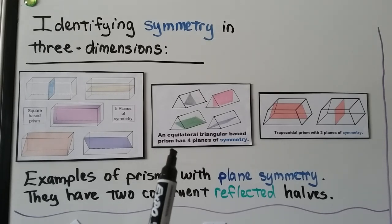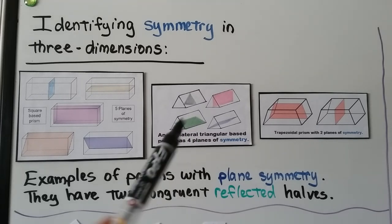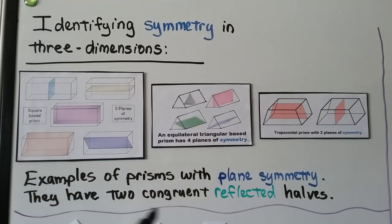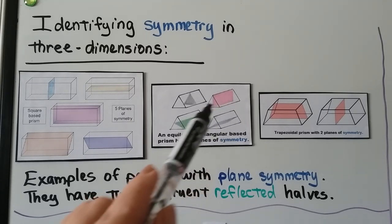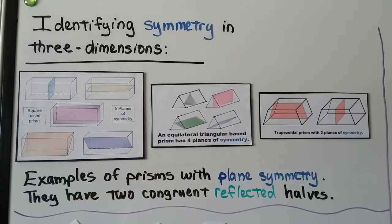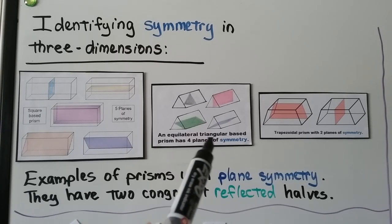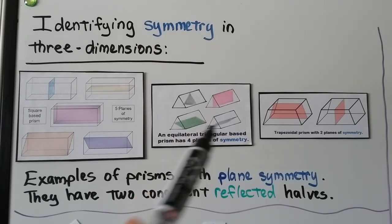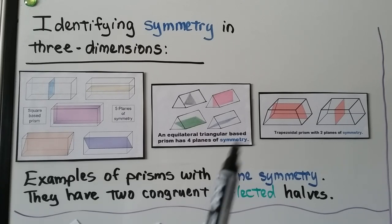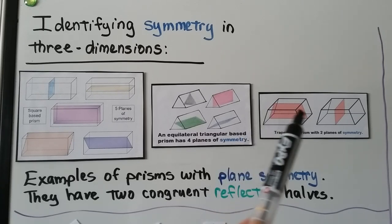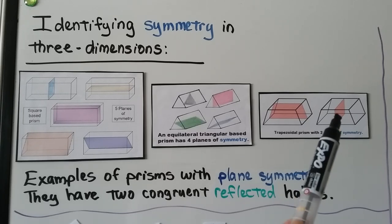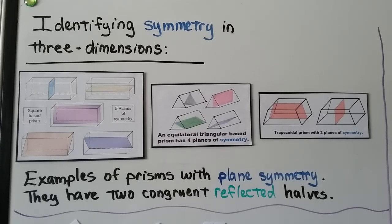An equilateral triangular-based prism has four planes of symmetry. We could do it right here and the front and back would be congruent, or running this way so the left side is congruent to the right side, or putting a plane this way so the bottom triangular prism is congruent to the top, or going this way so these two would be congruent. We can even do it with a trapezoid — a plane going this way makes the front and back congruent, or going this way makes the two sides congruent. Those are examples of prisms with plane symmetry having two congruent reflective halves.